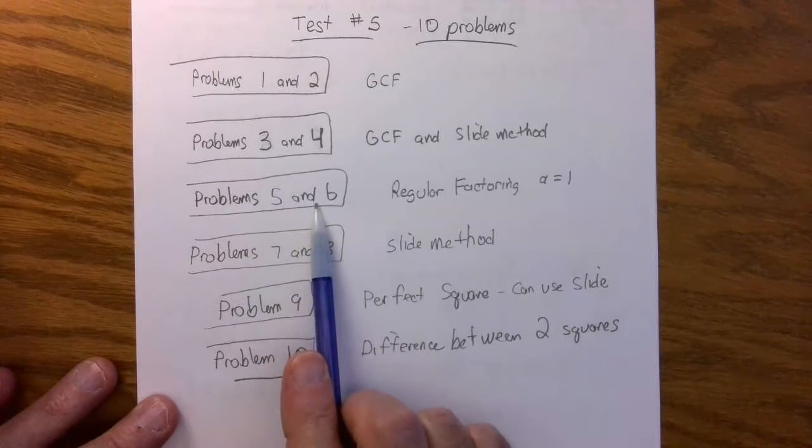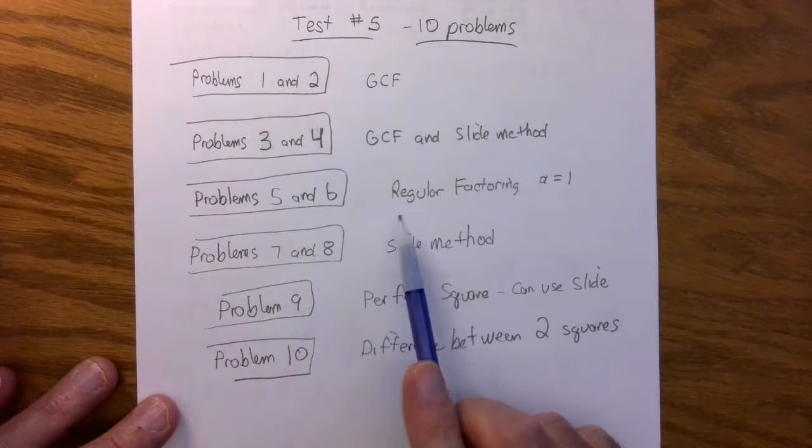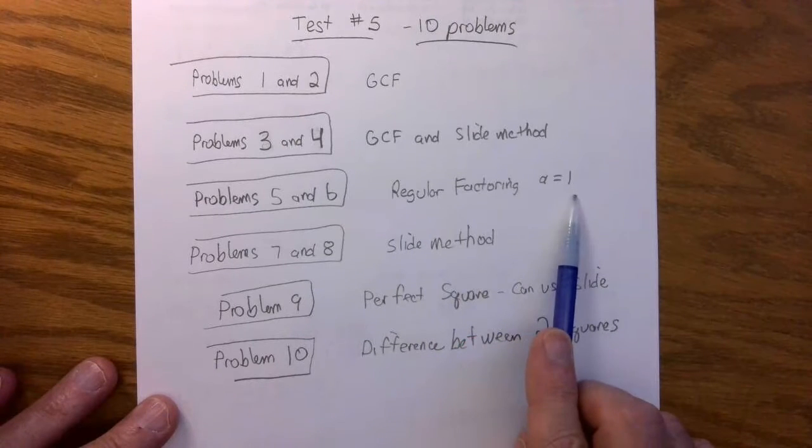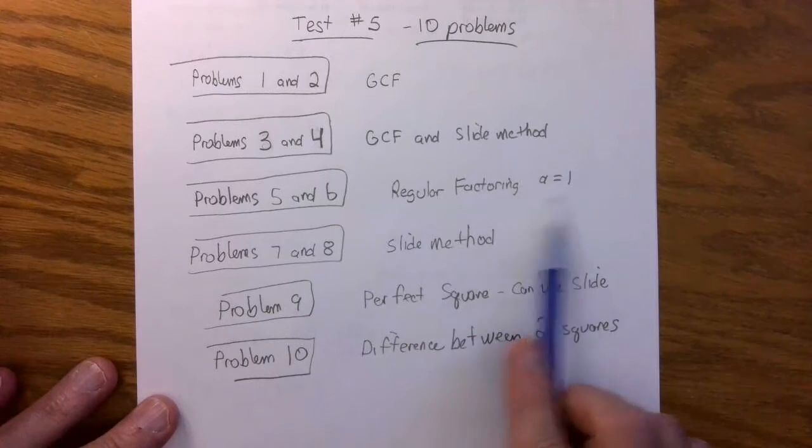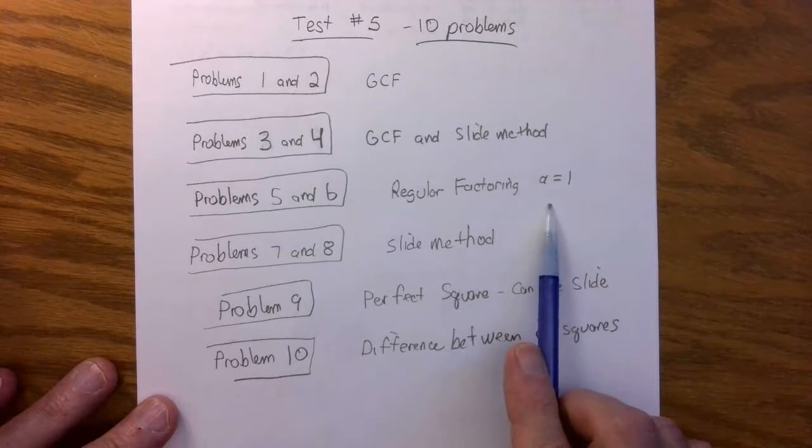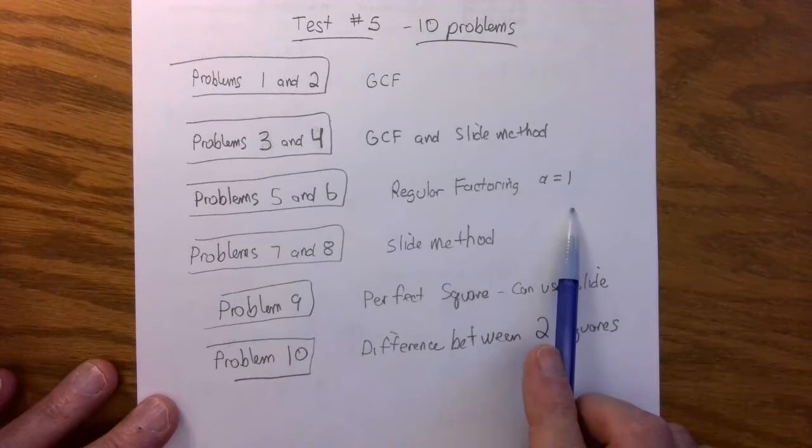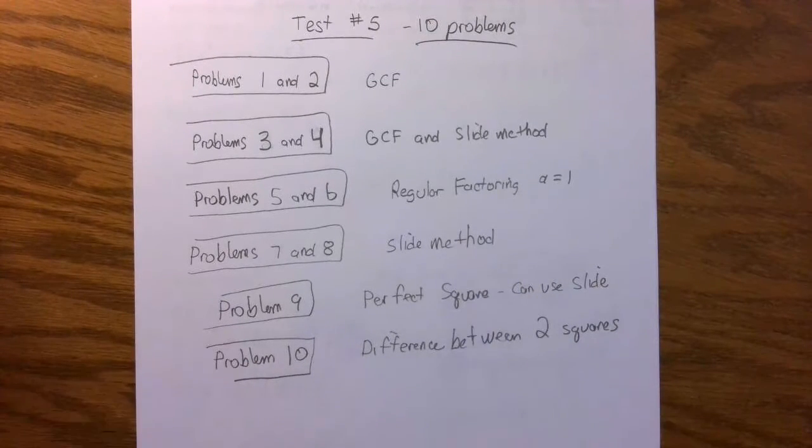Problem five and six, I think, are relatively easy. It's the regular factoring. A equals one. You don't have to slide anything. Just find two numbers that multiply together to give you that last count, and either added or subtracted gives you the middle term.